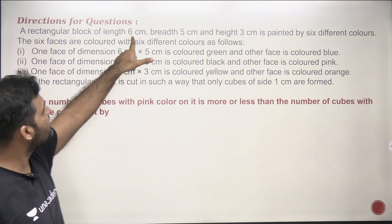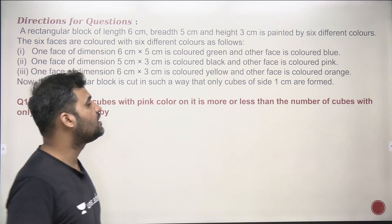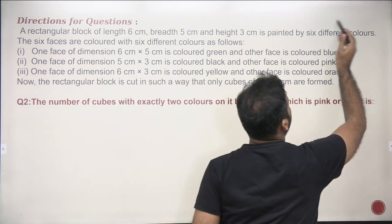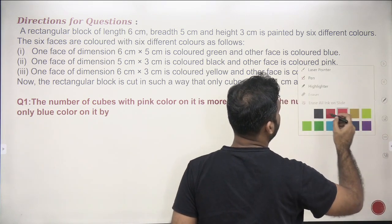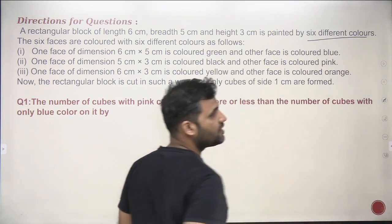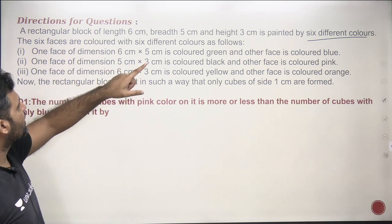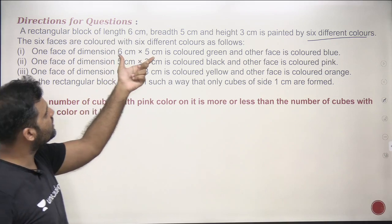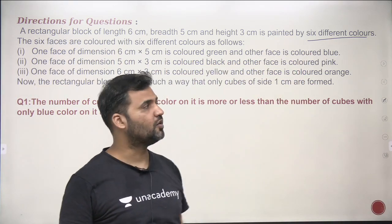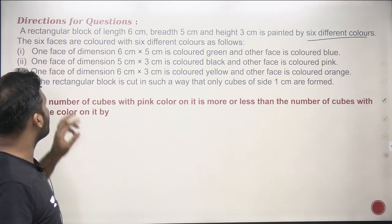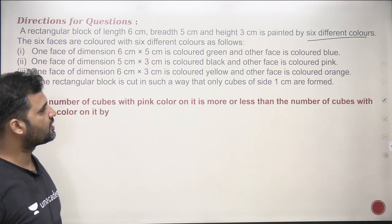It says a rectangular block of length 6 cm, width 5 cm, height 3 cm is painted by six different colors. That means on every face a different color has been used. Six different colors have been used. The six faces are colored with six different colors as follows: one face of dimension 6×5 is colored green and the other face is colored blue. One face of 5×3 centimeters is colored black and the other face is colored pink.